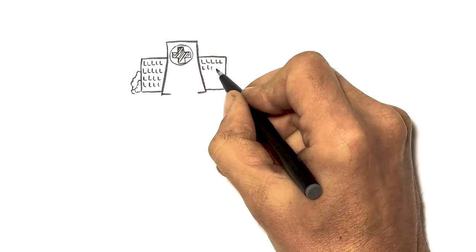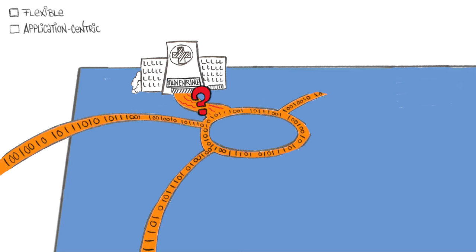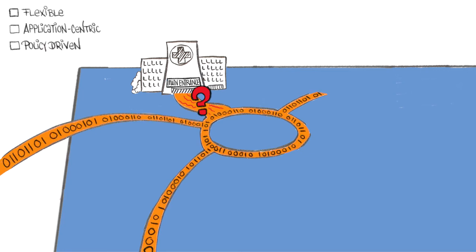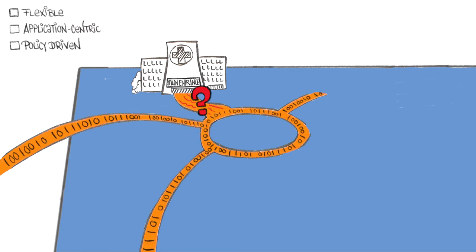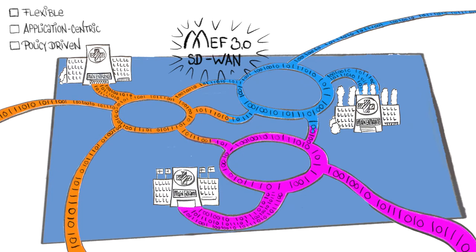What about mission critical apps? These apps require flexible, application-centric, policy-driven network services that leverage smart underlay connectivity services like Carrier Ethernet. This is the role of MEF 3.0 SD-WAN services.